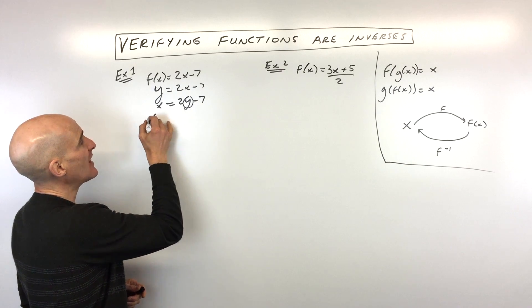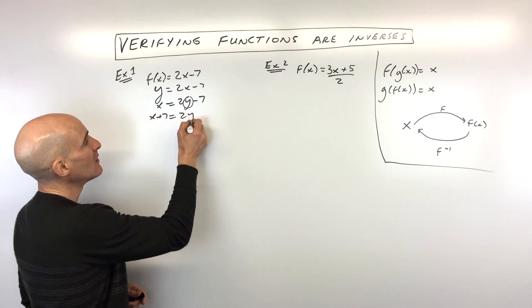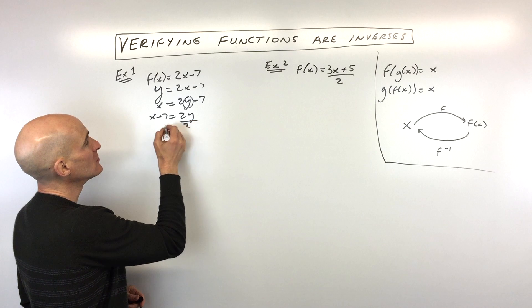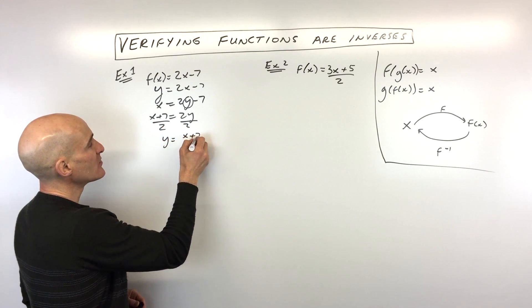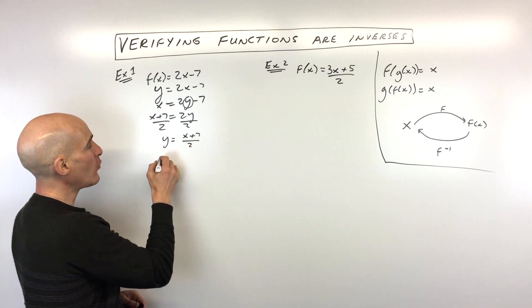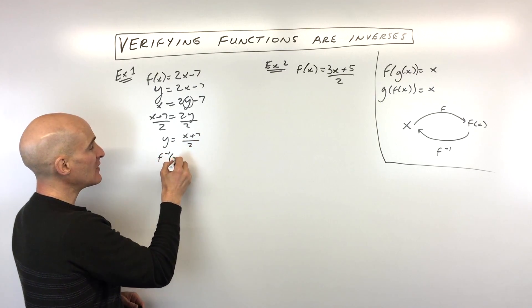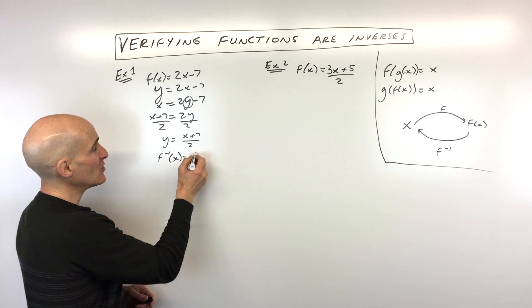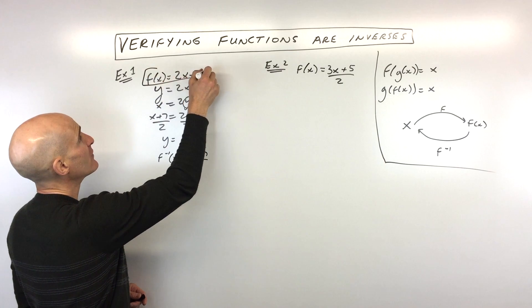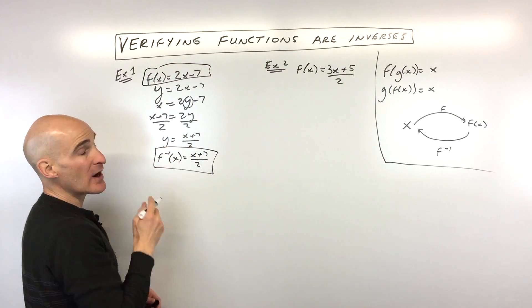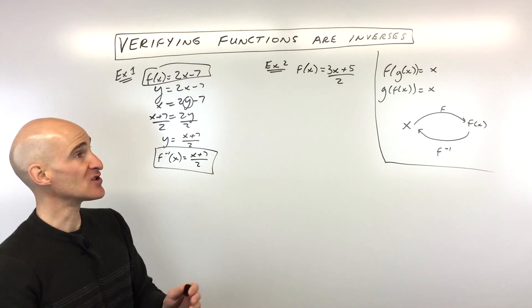Then what you want to do is you want to solve for the new Y. So I'm going to add seven to both sides, divide everything by two. And now you can see we get Y equals X plus seven over two. Now instead of Y, I'm going to use this F inverse notation. See that minus one to basically indicate that it's the inverse of this original function here. But now if we want to verify that they're actually inverses—say, for example, they gave us these two functions and said, are they inverses of each other?